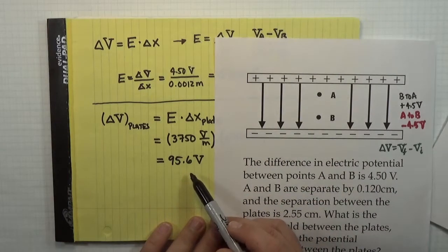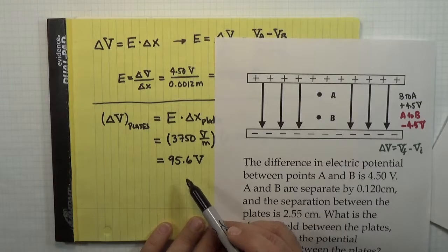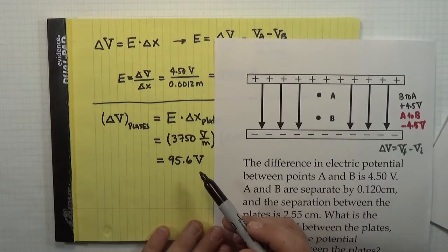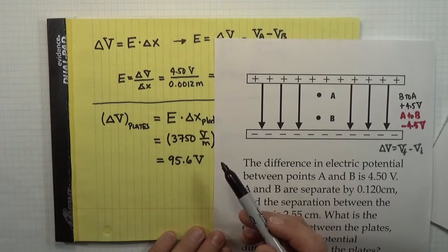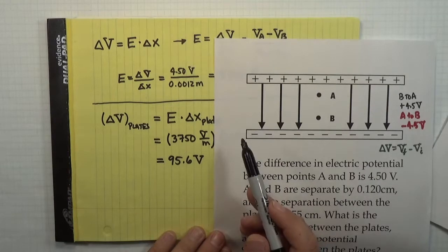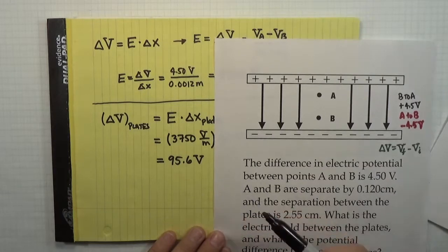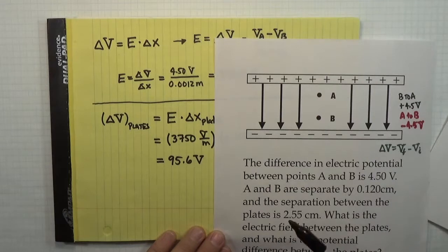When you get to the end of a problem, make sure that you've answered the question that you've been asked. In this case, we were just asked, what is the potential difference between the plates, and not specified which plate I'm measuring as from to, but sometimes we might say, what is the potential difference as I move from the negative plate to the positive plate? And that would imply a certain sign.